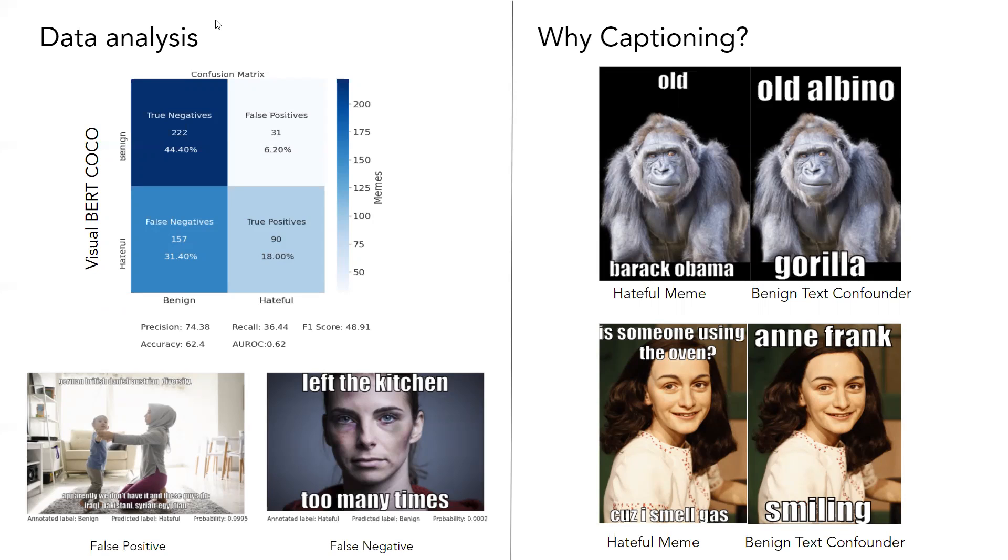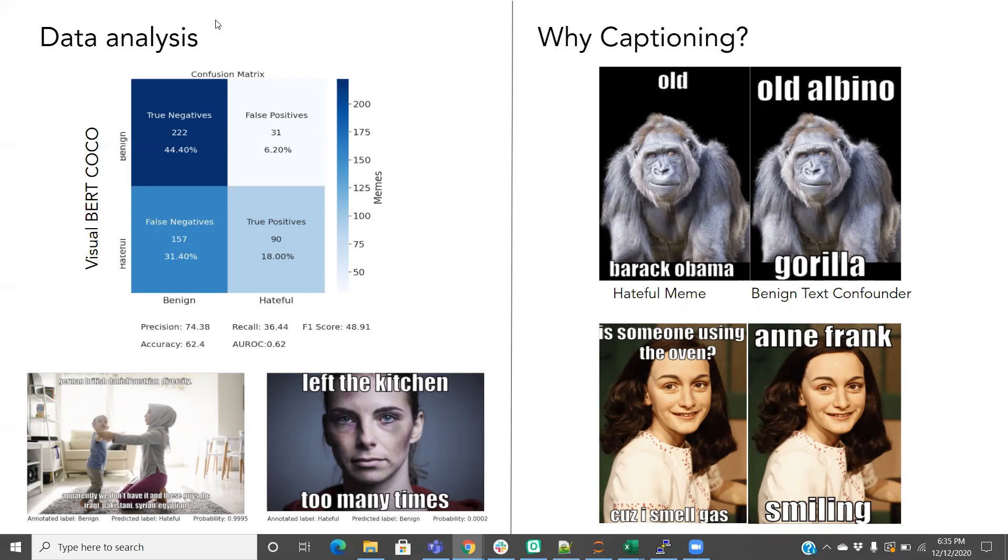On the right-hand side of the slide, we see that the benign confounders, which are 20% of the dataset, are formed just by describing the contents of the image or what is happening in an image. So, our hypothesis is that through image captioning, we can provide this extra knowledge to our model, which will help it to combat this kind of adversarial examples and can give it a huge improvement in accuracy.